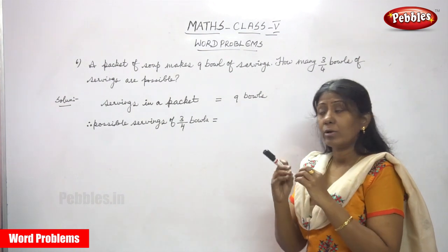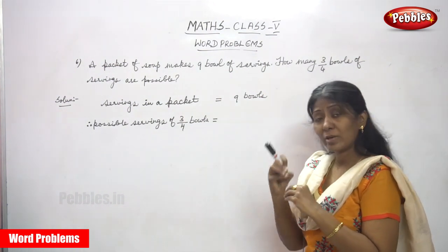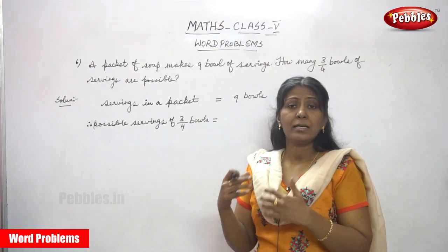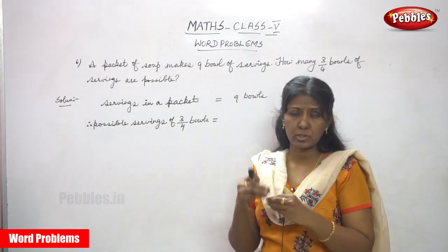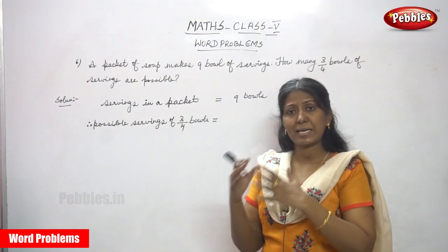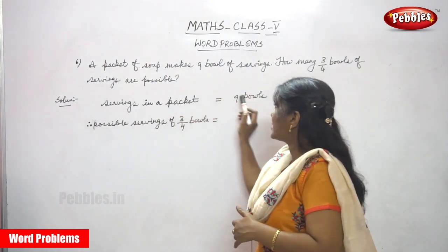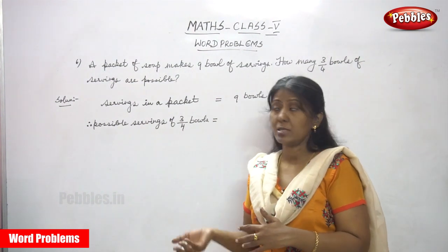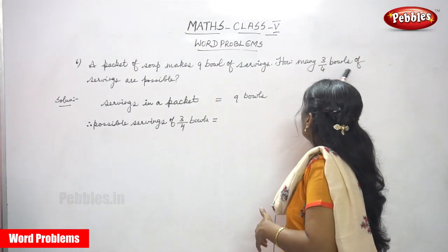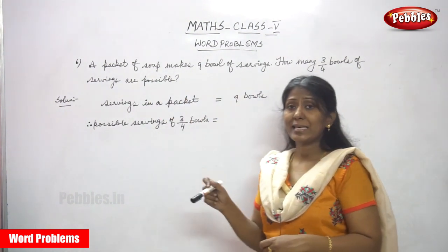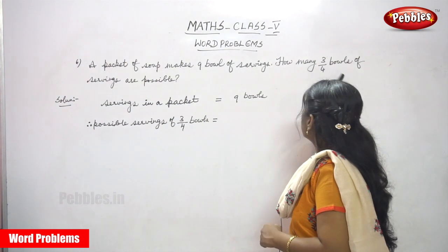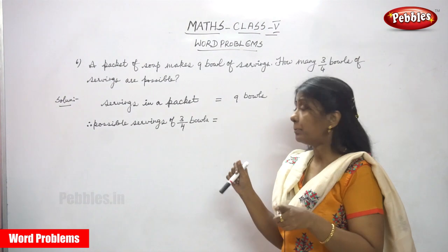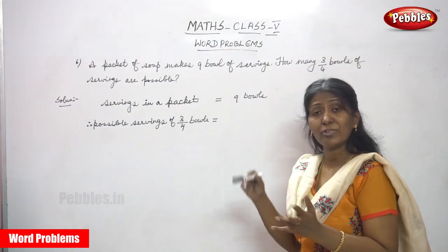From one packet, we have to make the soup. After that, we have to serve the soup for nine bowls. So servings in a packet is nine bowls. From one packet, we are making soup for nine bowls. So how many three by four bowls of servings are possible? Here, from one packet, they are serving soup for nine bowls.